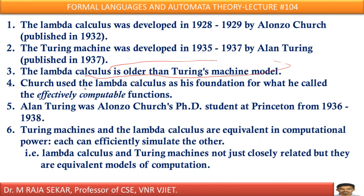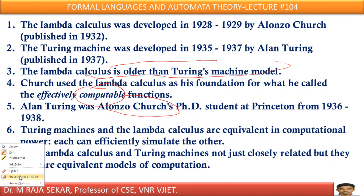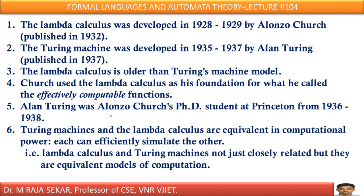Church used lambda calculus to explain what is computability, what is computation, and what is a computable function. Similarly, Alan Turing used the Turing machine to explain what is computable, what is a computable function, and what is computation. Surprisingly, Alan Turing was Alan Joe Church's PhD student at Princeton from 1936 to 1938. Turing machines and lambda calculus are equivalent in computational power — each can effectively simulate the other. Lambda calculus and Turing machines are not just closely related, but they are equivalent models of computation.